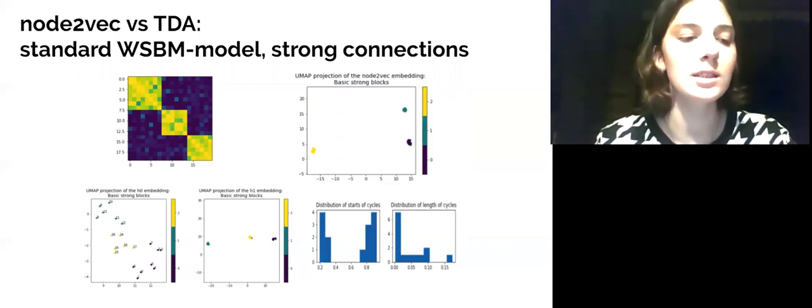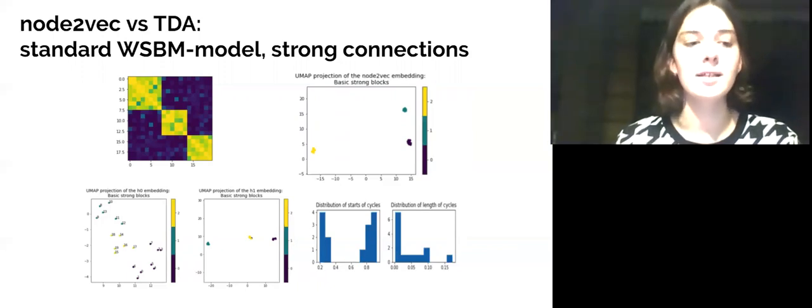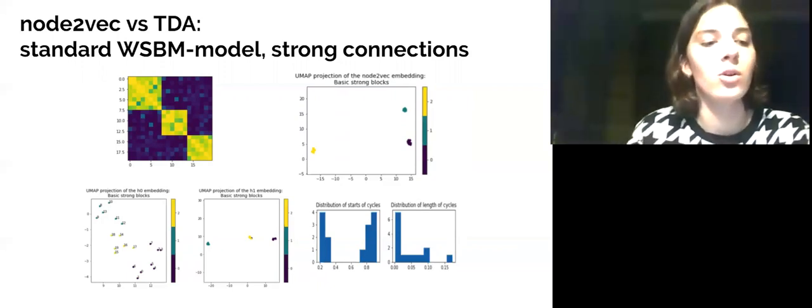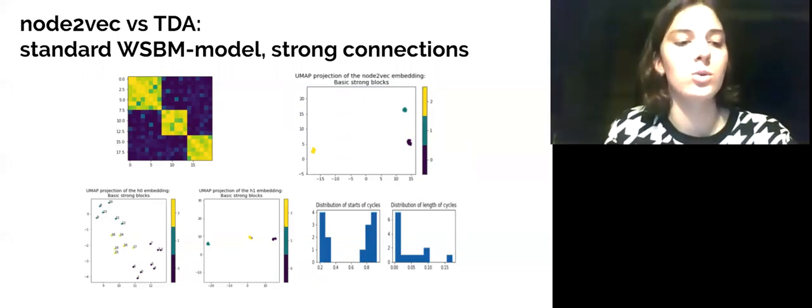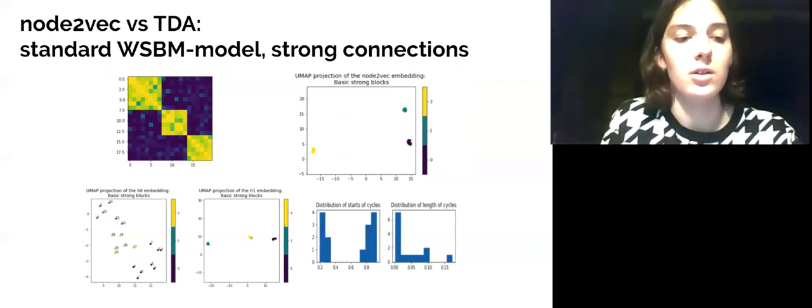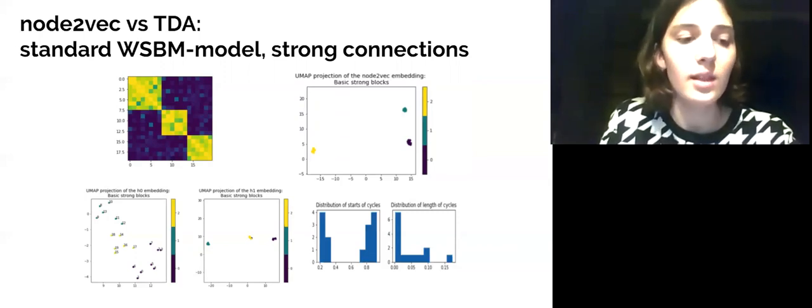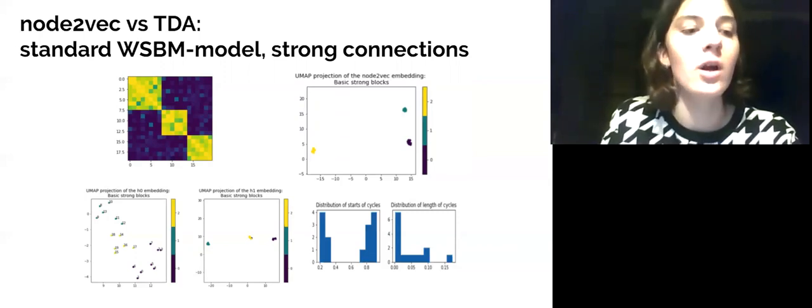The first block consists of eight nodes and is introduced with three short-lived cycles that appeared at the lower levels of filtration. All the cycles contain only the nodes that belong to the same block, except for node 5, which merged with node 4 too early at the level where a cycle started. So, in the visual representation of connected components, they are located near each other.